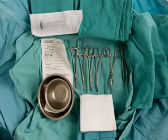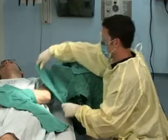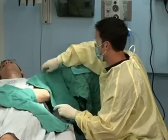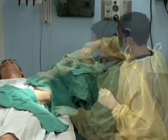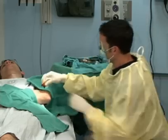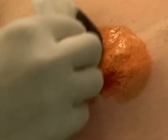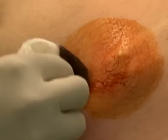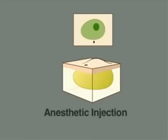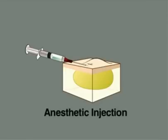Obtain informed consent by discussing the risks and benefits of this procedure, including pain, bleeding, and scar formation. Wash your hands with antibacterial soap before beginning the procedure. Protect yourself from exposure to bodily fluids, as many abscesses are under pressure — a face shield and gloves should be used. Place all equipment on a bedside table that is easy to reach, and position the patient so that the area for drainage is fully exposed.